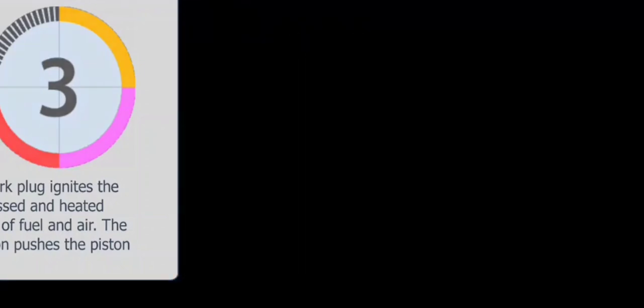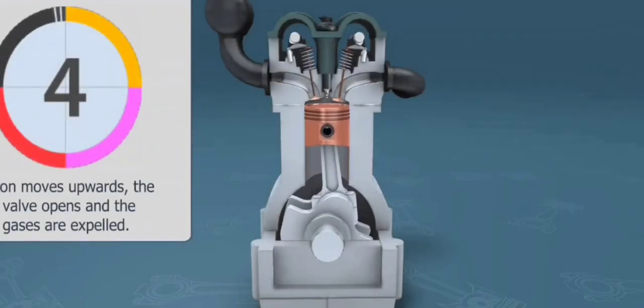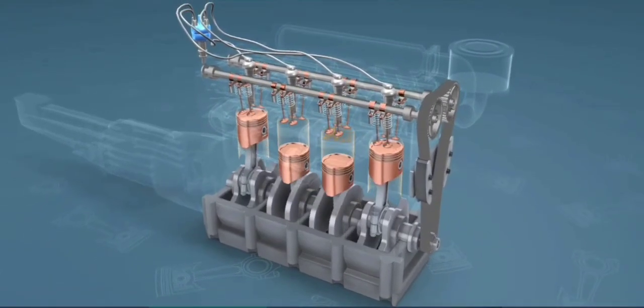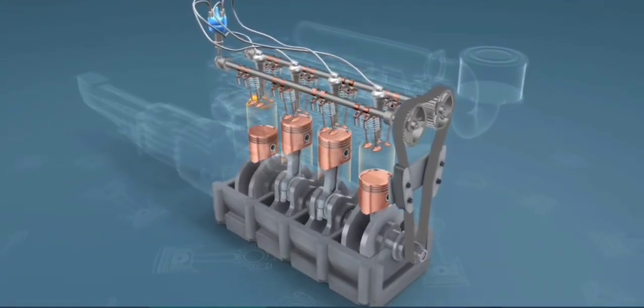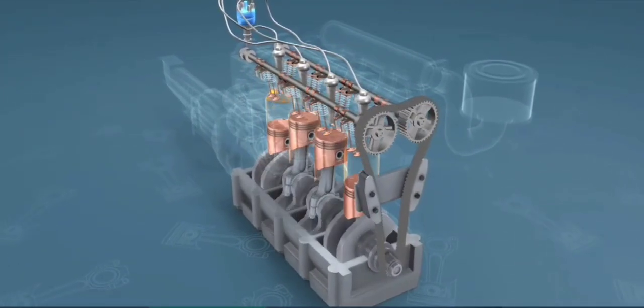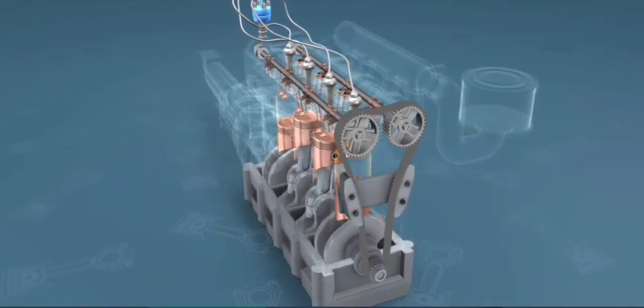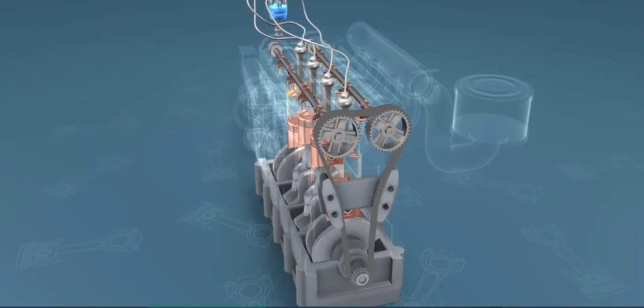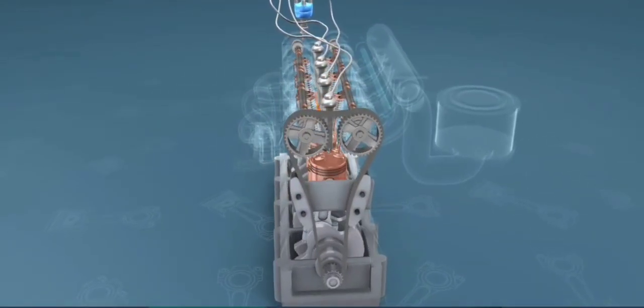This stroke of the piston begins at top dead center (TDC) and ends at bottom dead center (BDC). In this stroke, the intake valve must be in the open position while the piston pulls an air-fuel mixture into the cylinder by producing a partial vacuum in the cylinder through its downward motion.